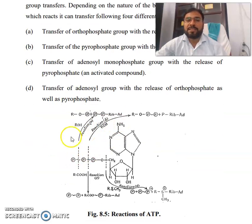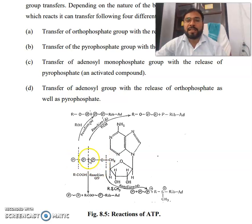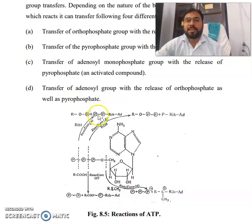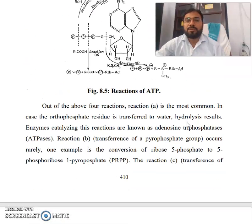Look at this scheme showing the reactions of ATP. There are three phosphate positions — first, second, and third. Cleavage can occur at each position, giving different products and reactions with ROH. So out of these four reactions, you can see the different outcomes.